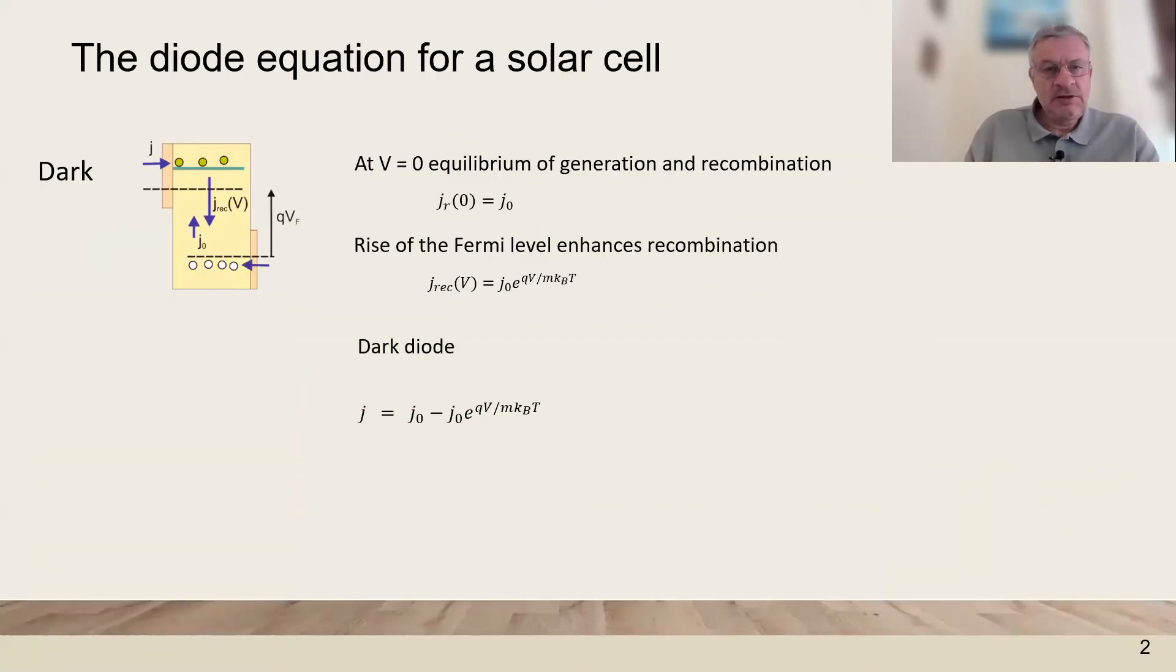Operating a solar cell. The solar cell operates on a diode structure in which we have a dark recombination current, J naught, and this is amplified by enhancing the voltage.